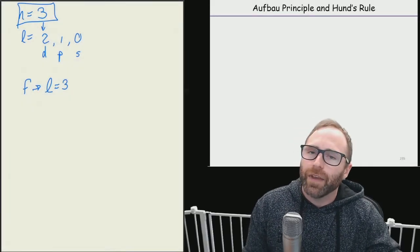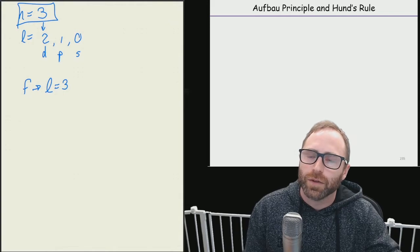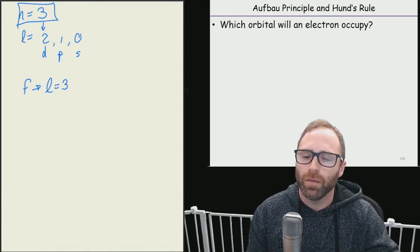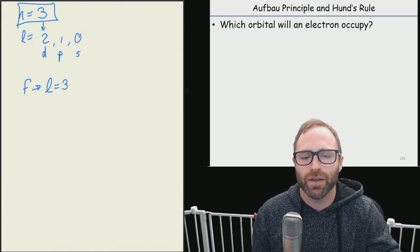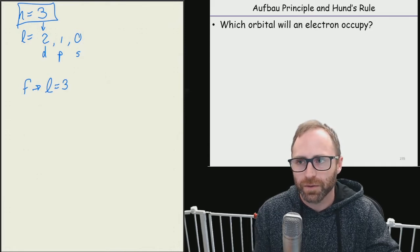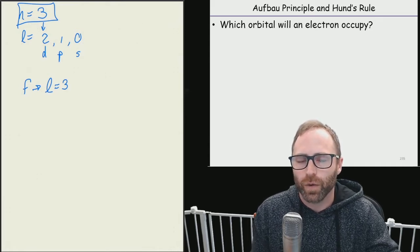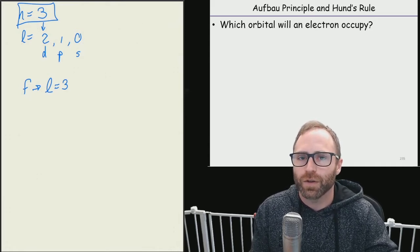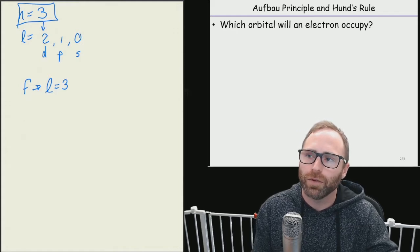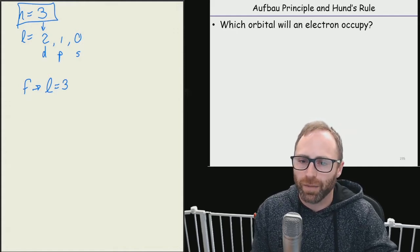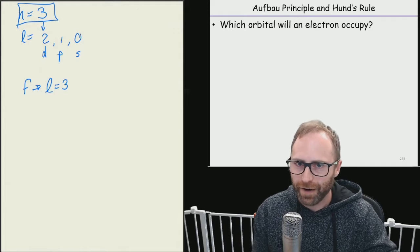Okay, let's talk about the Aufbau principle and Hund's rule. These, along with the Pauli exclusion principle which we're going to talk about, are going to help us answer this question of which orbital will an electron occupy.